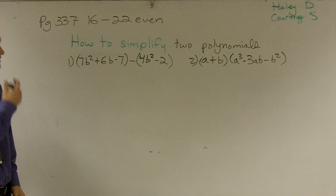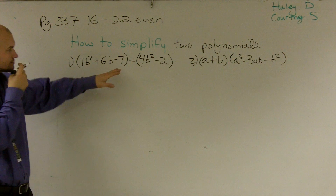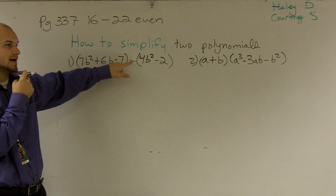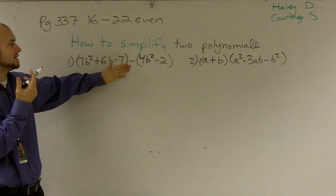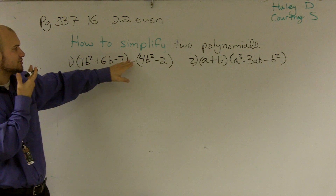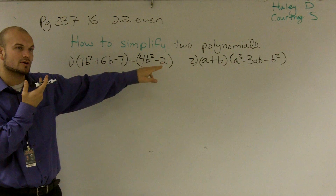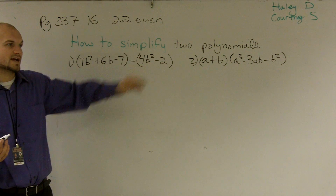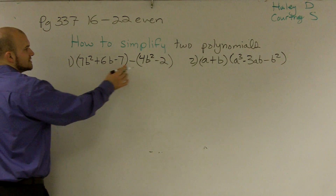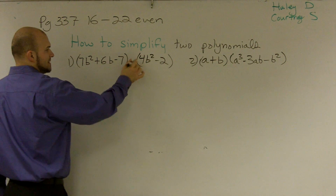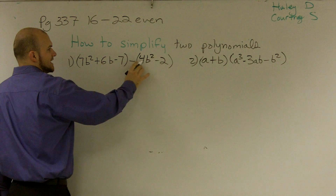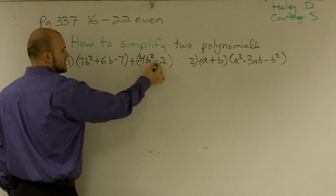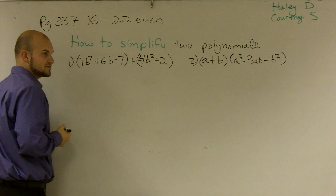The main important thing when subtracting two polynomials is that I have a subtraction, so I have to make sure I distribute. What I like to do is distribute that negative sign into each one of my terms, and I can essentially change it to an addition problem. So I'm going to make this minus a negative 4b, change it to addition, make that a negative 4b and then a positive 2.